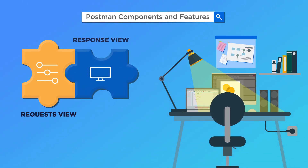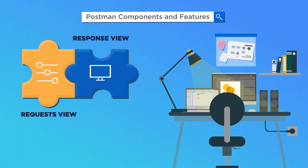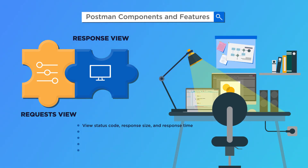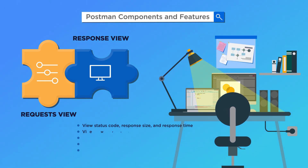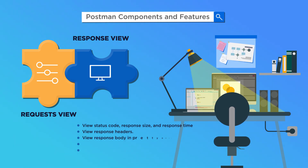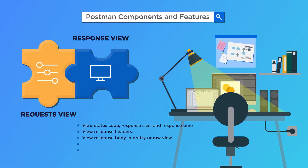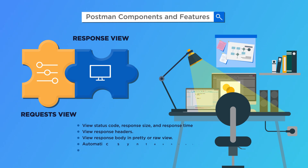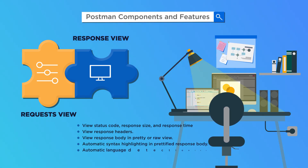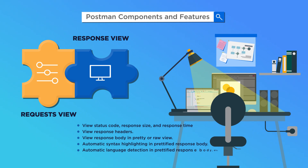Second, Postman has a response view component that helps us to view status code, response size, and response time; view response headers; view the response body in pretty or raw view; automatic syntax highlighting in the prettified response body; and automatic language detection in the prettified response body.